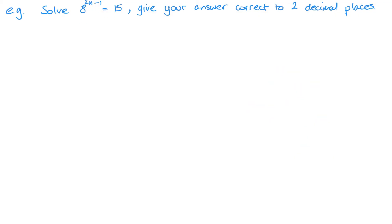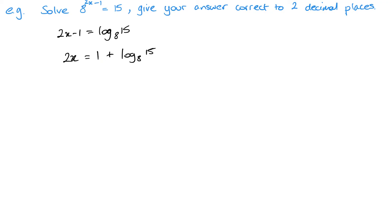Very similar question here: 8 to the power of 2x minus 1 equals 15. Same kind of process. Using the converting method, this gives me 2x minus 1 equals log of 15 to the base 8. Then rearranging: 2x equals 1 plus log of 15 to the base 8, writing the 1 first so it doesn't look like part of the log. Dividing by 2 gives 1 plus log₈(15), all divided by 2, which equals 1.15 to two decimal places.